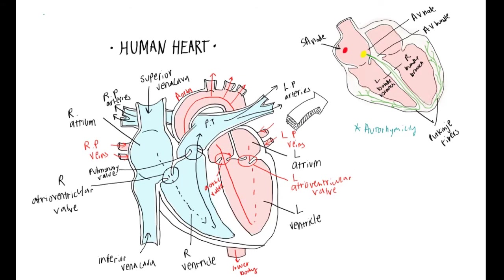Together, these five autorhythmic fibers help with the depolarization of the heart. It first begins with the SA node, which transmits the signal across both atriums through gap junctions and also to the AV node. The AV node then transmits the signal to the AV bundle, which transmits it to the bundle branches, which then run down to the Purkinje fibers.